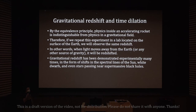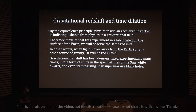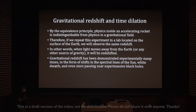In this accelerating rocket lab experiment there will be a redshift. By the equivalence principle, physics inside an accelerating rocket is indistinguishable from physics in a gravitational field — you don't know whether you're inside an accelerating rocket or on Earth's surface. Therefore, if we repeat this experiment in a lab on Earth's surface, we observe the same redshift. In other words, when light moves away from Earth or any other source of gravity, it will be redshifted.